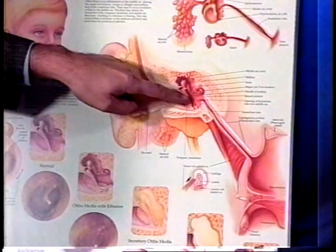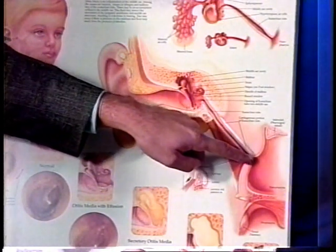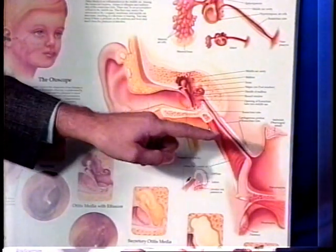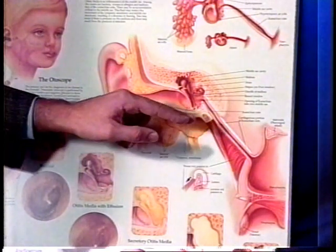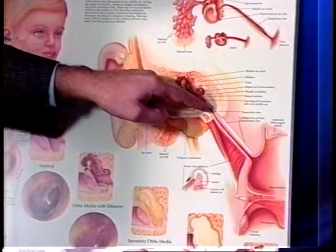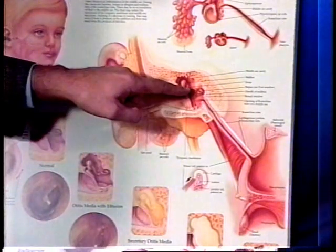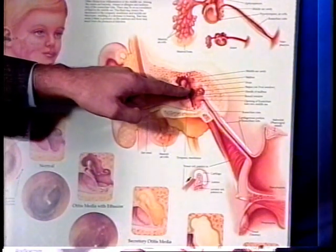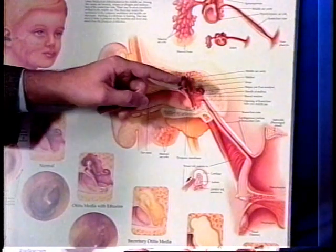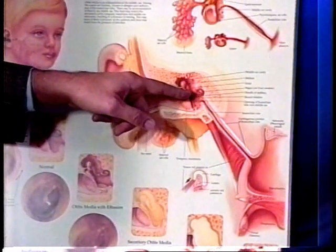The middle ear is connected to the back of the nose via the eustachian tube. Every time we swallow, open or close our mouth, or yawn, the eustachian tube opens and closes and allows the middle ear space to become aerated or pressure equalized. That's why these tubes are also called ventilation tubes or pressure equalizing tubes.